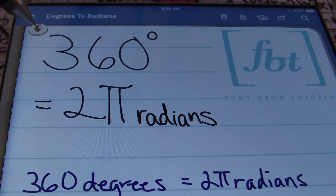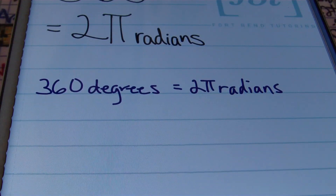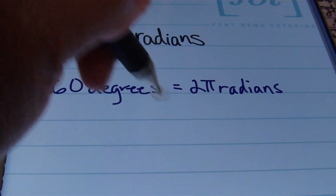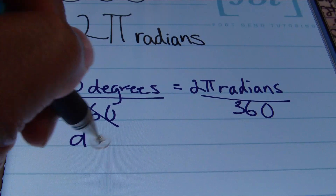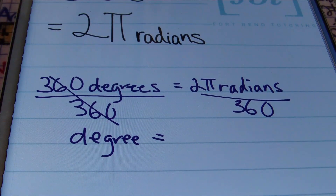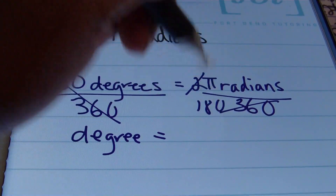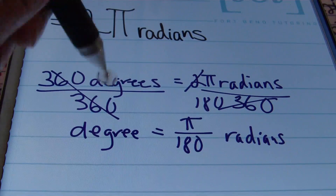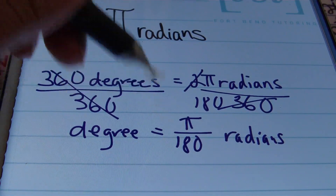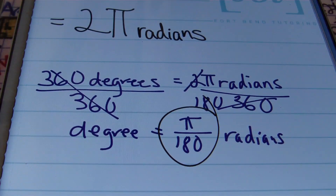The measurement of a central angle of a circle can be stated in degrees as well as in radians. If we were to solve for degrees, we could divide both sides by 360. Dividing both sides by 360, we cancel out our 360s, and we find that 1 degree is equivalent to — simplifying: 2 goes into 360 one-hundred-eighty times — π over 180 radians. That's the conversion factor we'll be using in this video.